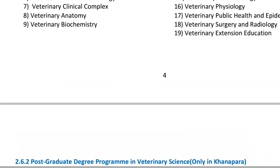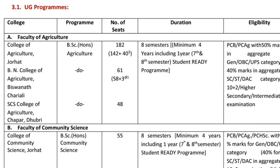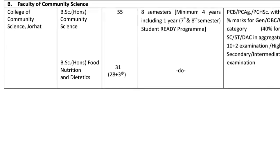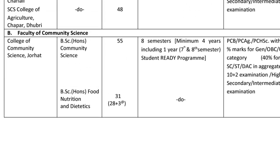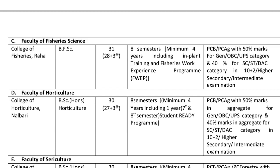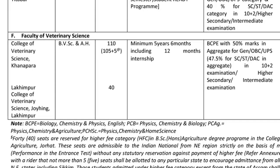For the UG program, the College of Agriculture and SCS College of Agriculture offer degrees with a minimum of four years including one year internship. The minimum qualifying mark is 50%. Intake seats: the Faculty of Horticulture has 31 seats, Faculty of Sericulture has 32 seats, and Faculty of Veterinary Science has 32 seats.